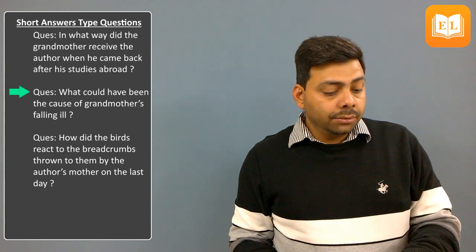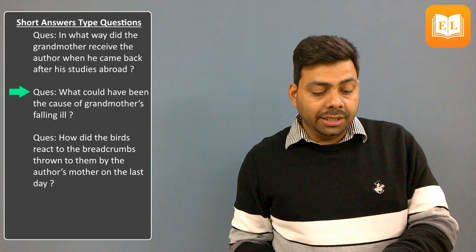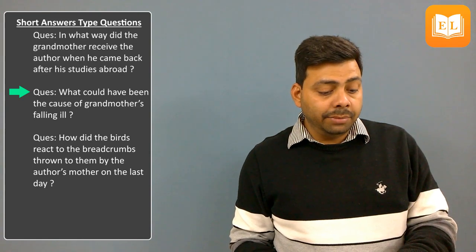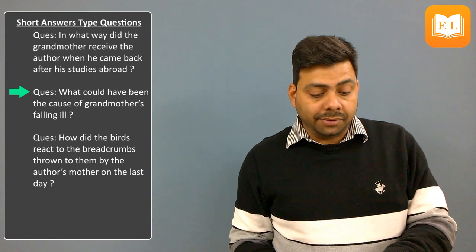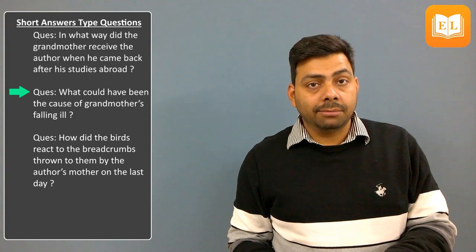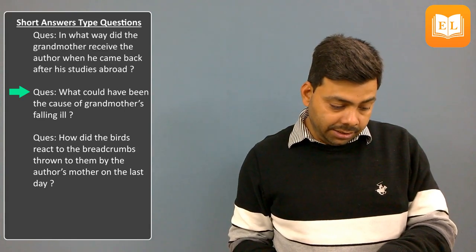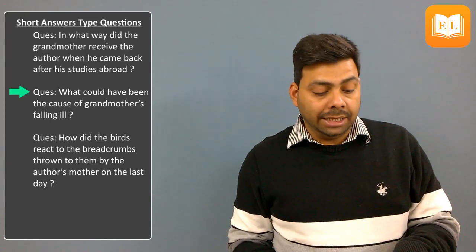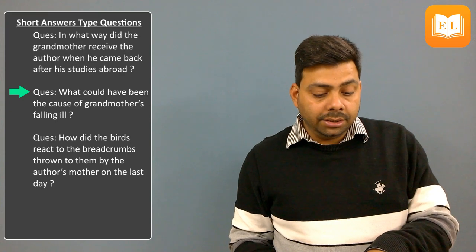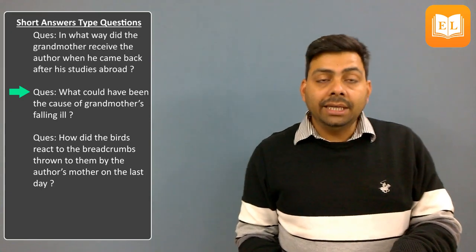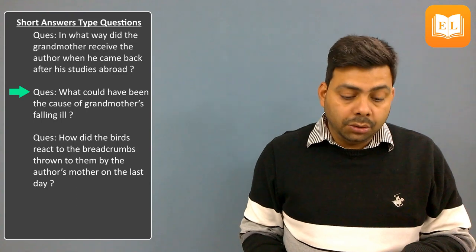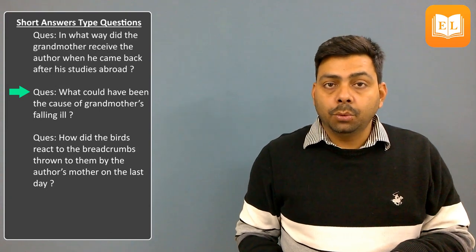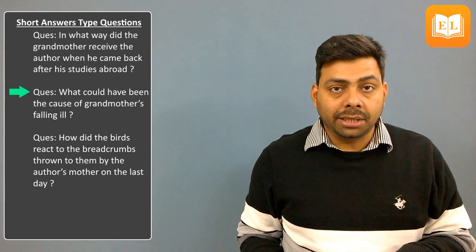Next question: What could have been the cause of grandmother's falling ill? Answer: The author had come back from abroad after five years. Grandmother collected the women of the neighborhood. She kept singing and thumping a drum for several hours. She over-strained herself and fell ill.